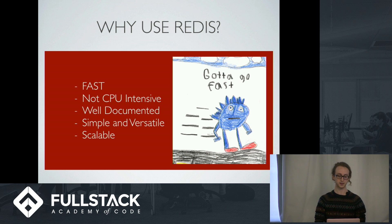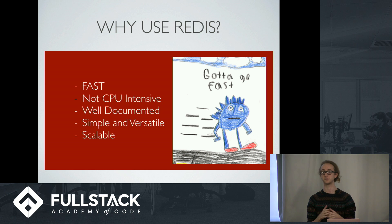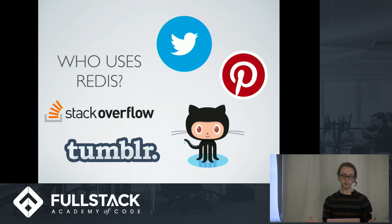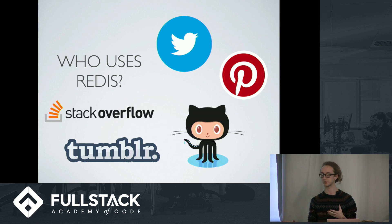Redis is really well documented, simple, and easy to use. It's mostly a bunch of commands that interact with different data structures you're creating, and it's really versatile — you can use it in a ton of different ways. Because of all of this, it's also very scalable, and lots of very big products use it. Twitter, Pinterest, Stack Overflow, Tumblr, and GitHub all use Redis, just to name a few. All of these companies mostly use Redis as a cache, and use a different database for storage since they're storing huge amounts of data.